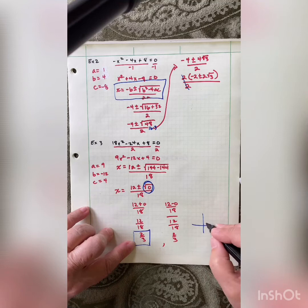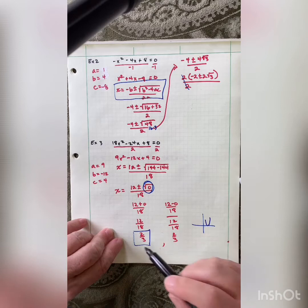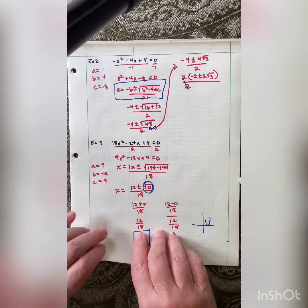When you have a double root, you only need to do the work once. And what's happening graphically is the parabola is bouncing off the x-axis at 2 thirds. Anytime you have a double root, it bounces off the x-axis there.